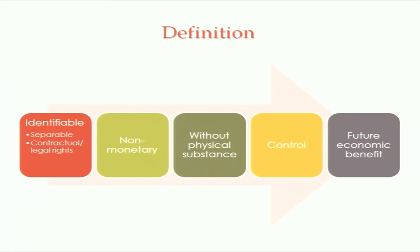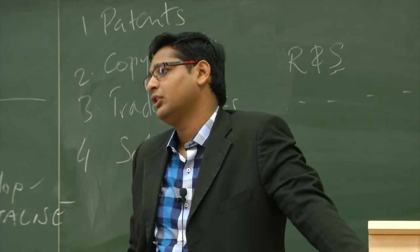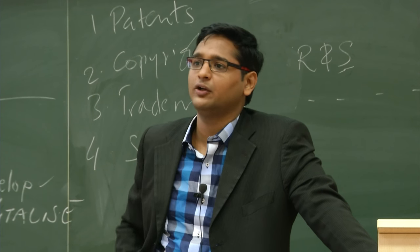Intangible assets: identifiable, non-monetary, without physical substance. Control means you can use it as you want, for whatever you want. Future economic benefit can be revenue generation or cost saving — any economic benefit in any manner for a future period. You have to recognize intangible asset at cost. Cost means purchase price and any directly attributable cost or implementation cost, which includes employee cost, employee benefits, professional fees, testing charges, rent, or depreciation of the instruments used — all those can be capitalized as development cost or part of that intangible asset.